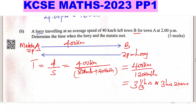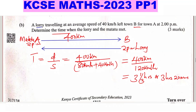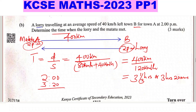Both started at 2 PM, so we add the time taken to meet: 2 PM + 3 hours 20 minutes = 5:20 PM, or 17:20 hours. That is the time when the lorry and the matatu met.